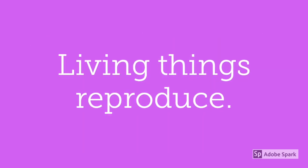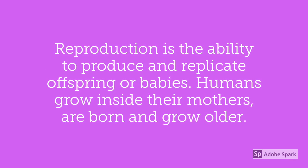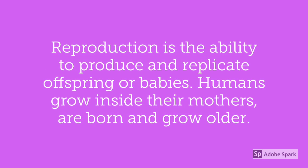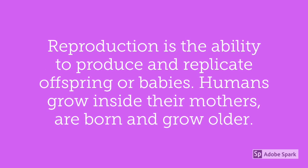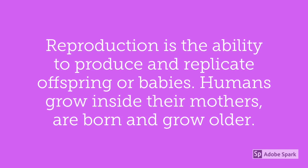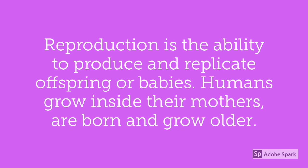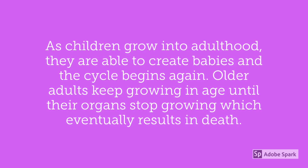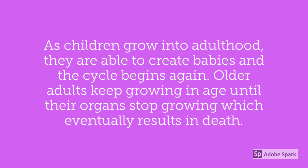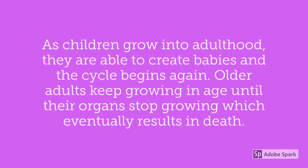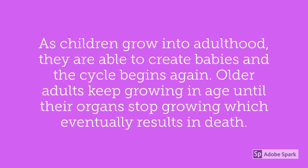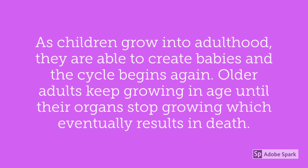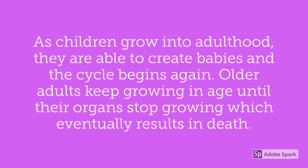Living things reproduce. Reproduction is the ability to produce and replicate offspring or babies. Humans grow inside their mothers, are born, and grow older. As children grow into adulthood they are able to create babies and the cycle begins again. Older adults keep growing in age until their organs stop working, which eventually results in death.